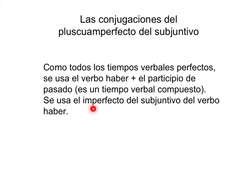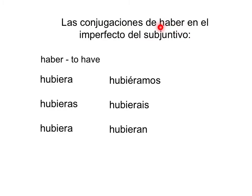Se usa el perfecto del subjuntivo del verbo haber en el pluscuamperfecto del subjuntivo. En las conjugaciones del verbo haber en el perfecto del subjuntivo, tenemos: hubiera, hubieras, hubiera, hubiéramos, hubieras, hubieran. Noten que hay un acento sobre la forma de nosotros, sobre la e, antes de la terminación -amos.